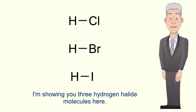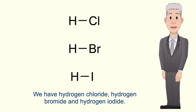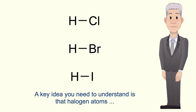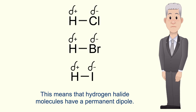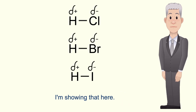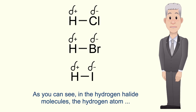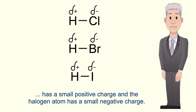I'm showing you three hydrogen halide molecules here: hydrogen chloride, hydrogen bromide, and hydrogen iodide. A key idea you need to understand is that halogen atoms are more electronegative than hydrogen. This means that hydrogen halide molecules have a permanent dipole. The hydrogen atom has a small positive charge and the halogen atom has a small negative charge.